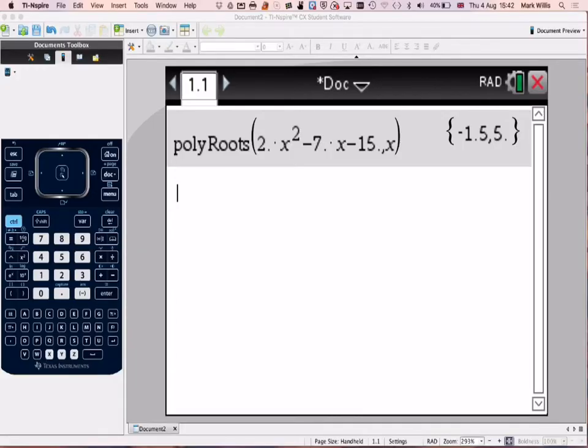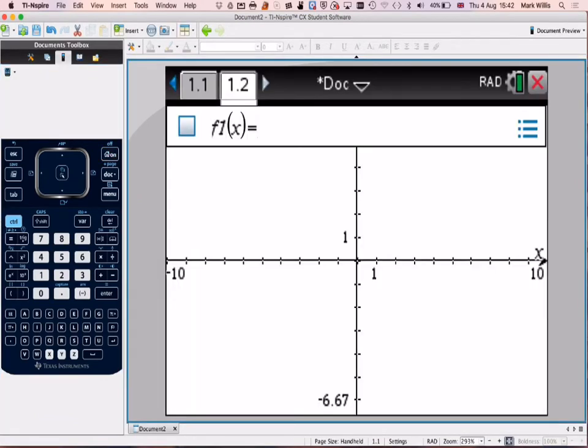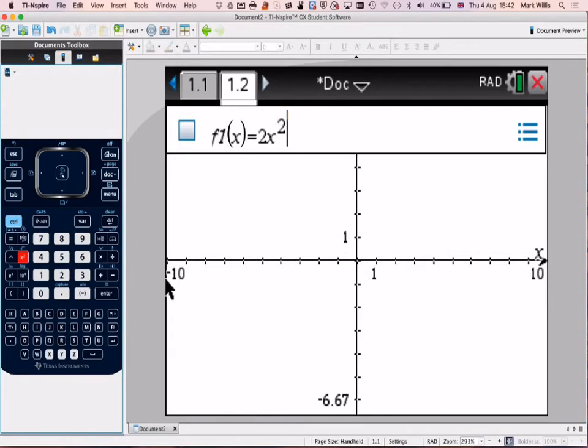Now, in order to use the graphical method, we need to first of all draw the line y is equal to 2x squared minus 7x minus 15. So going back to my calculator, I'm just going back to the home screen. This time I want to select a graphing mode. So select graphing mode, and now put in 2x squared minus 7x minus 15.